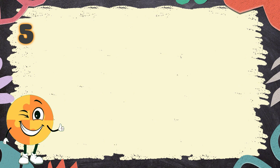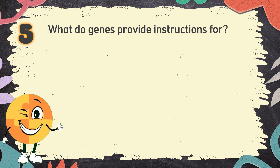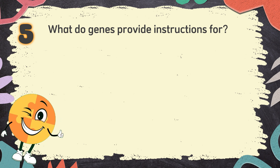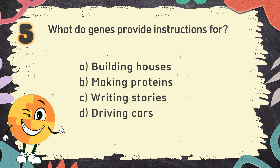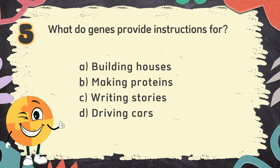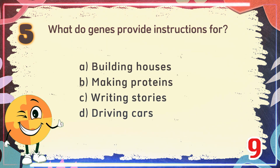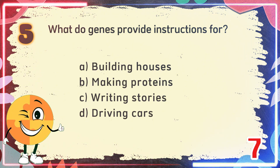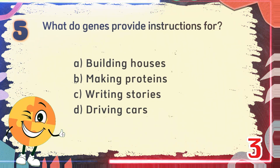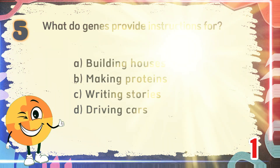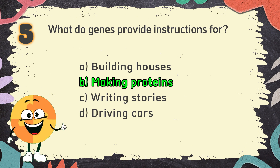Number 5. What do genes provide instructions for? The choices are A. Building houses, B. Making proteins, C. Writing stories, D. Driving cars. The correct answer is B. Making proteins.